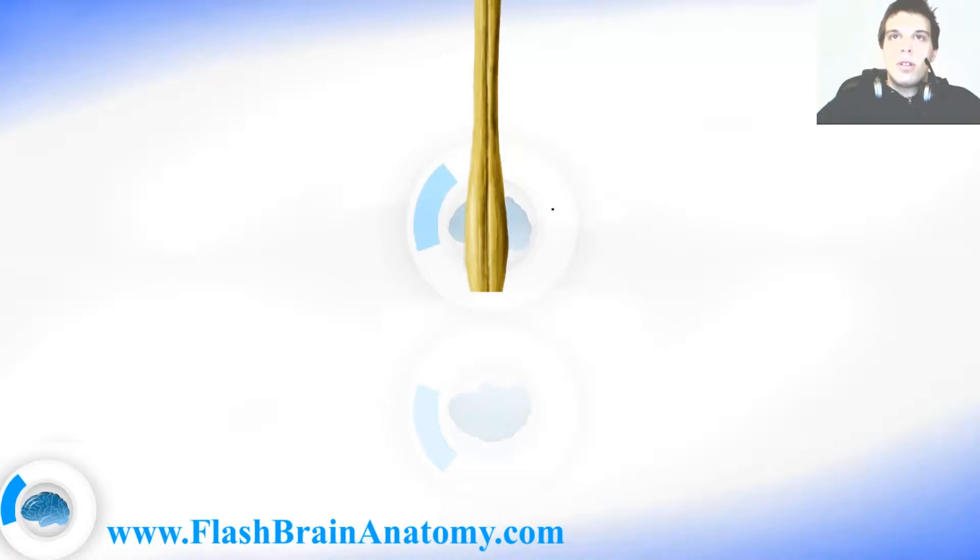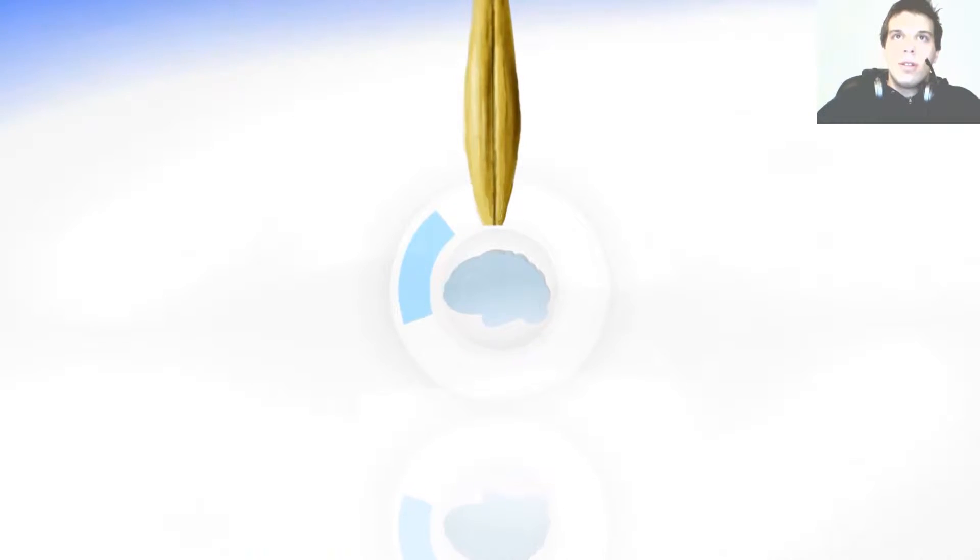The lumbar part consists of 5 segments, up there we had 12 on a thoracic spine. After that comes the sacral part and the coccygeal part.